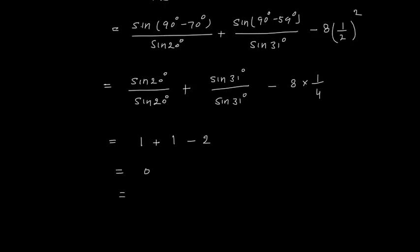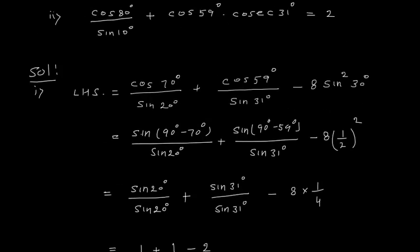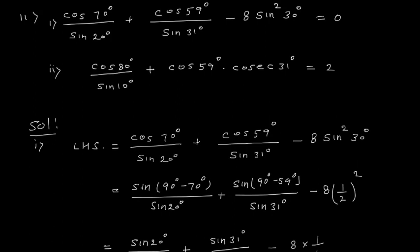So we get 1 + 1 − 2 = 0, which is the right hand side. Hence left hand side equals right hand side, that is the whole expression equals 0.